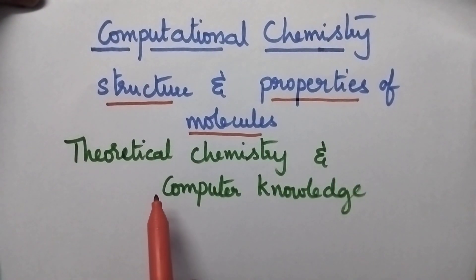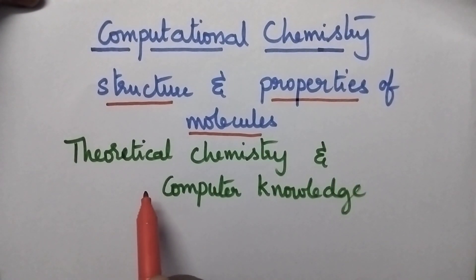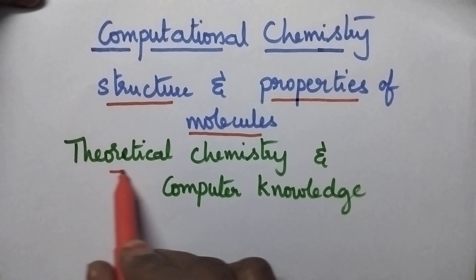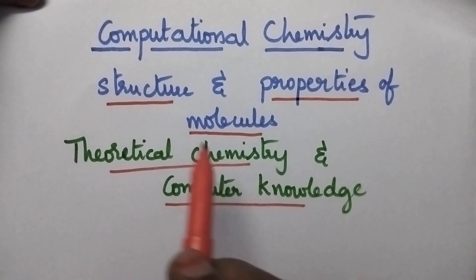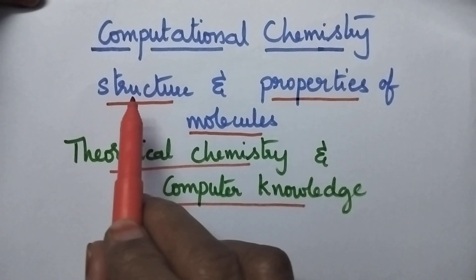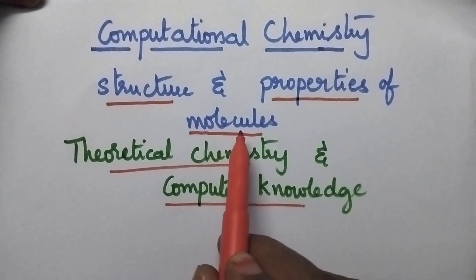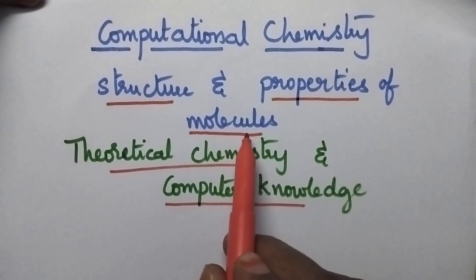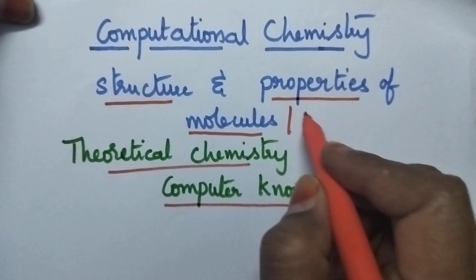Computational chemistry mainly uses theoretical chemistry and also computer knowledge in order to determine the structure and properties of molecules. Especially, computational chemistry deals with biological molecules.